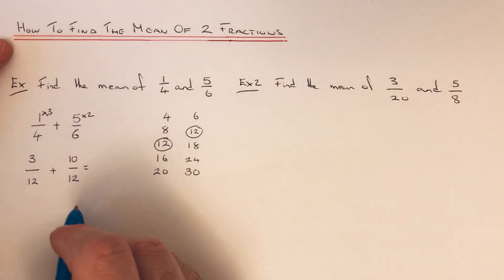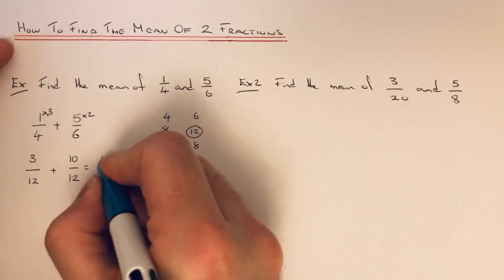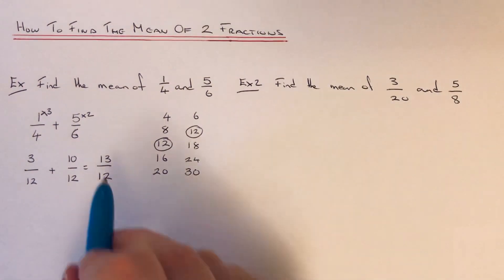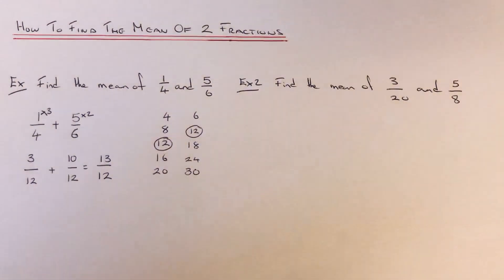So we can now add these two fractions together. So 3/12 and 10/12 is 13/12. So we've got an improper fraction because the top's bigger than the bottom. There's no need to worry about that. So we now need to just divide this answer by two because we're working out the mean.